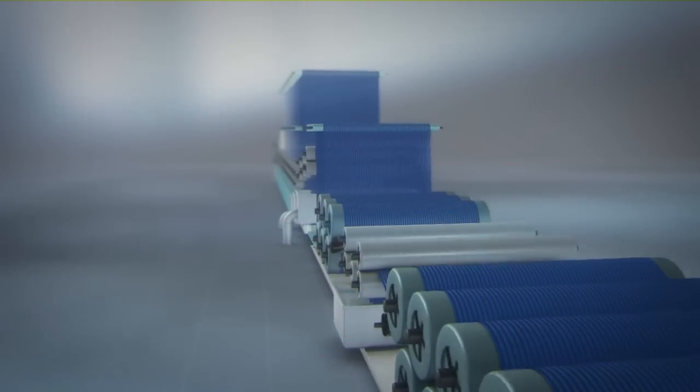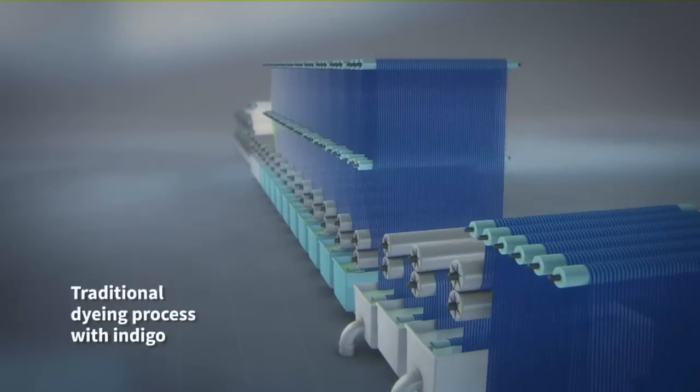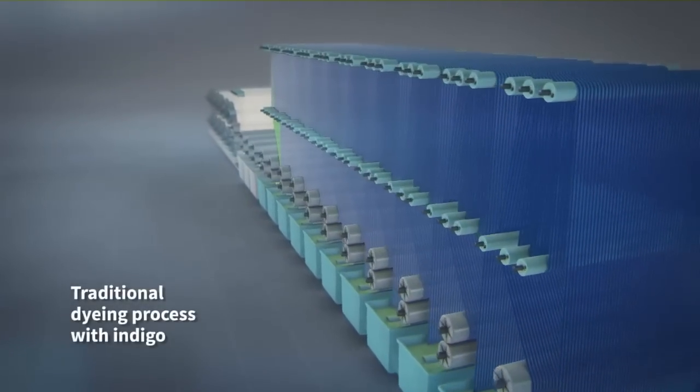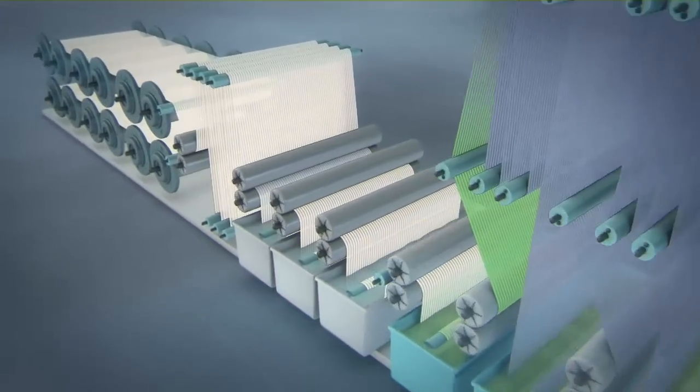Traditional dyeing with indigo requires the use of long production lines, some stretching to more than half a mile in length. These machines consume enormous amounts of water and energy.